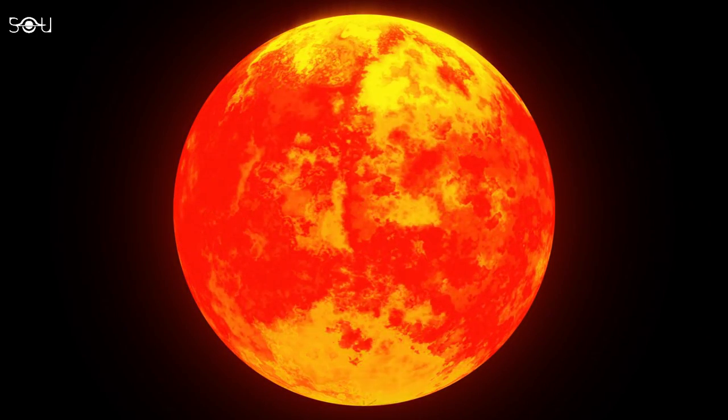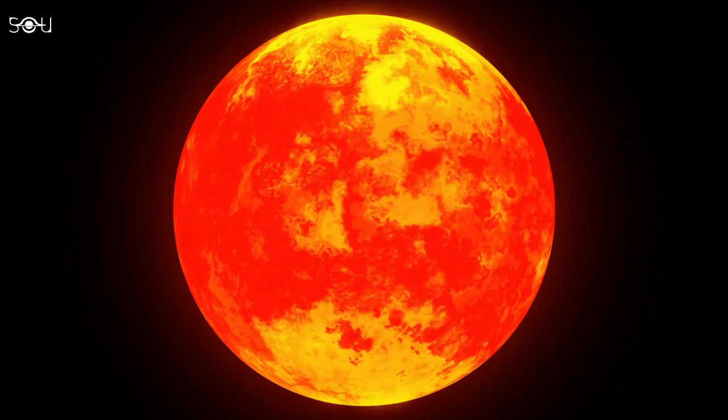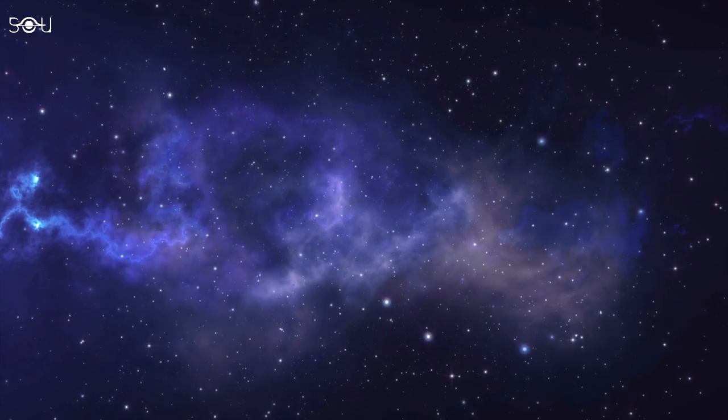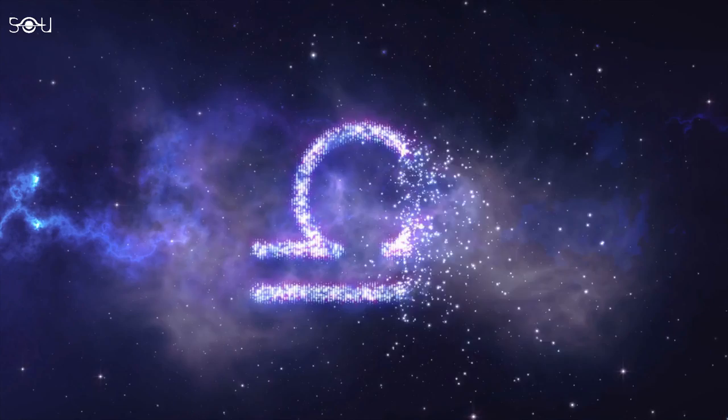The main spectral type of Methuselah star is G, same as that of the sun. It is about 202 light years away in the constellation of Libra.